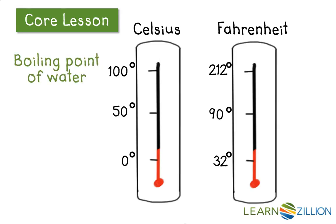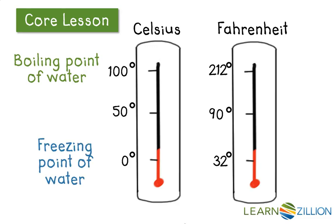We can look at some different reference points on the thermometers. The boiling point of water is 100 degrees Celsius and 212 degrees Fahrenheit. The freezing point of water is 0 degrees Celsius and 32 degrees Fahrenheit.